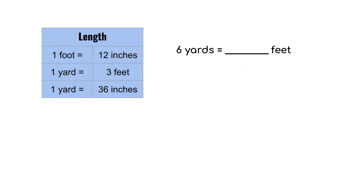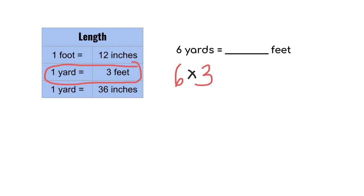Here we have six yards, and we're converting to feet. So we are going to start with six. We're going to multiply, because we're going from a larger unit of yards to a smaller unit of feet. We find the conversion in the chart that has yards and feet together, so we are going to multiply by three. Six times three is 18. So six yards equals 18 feet.